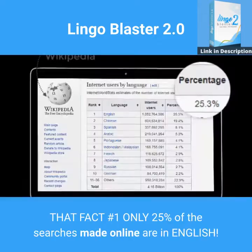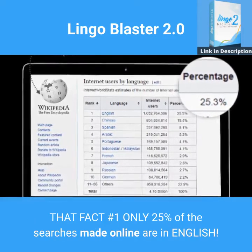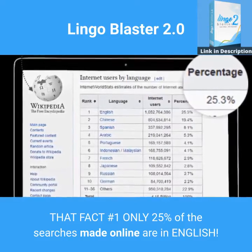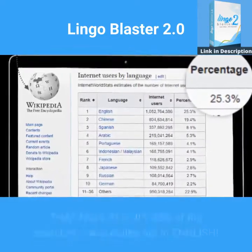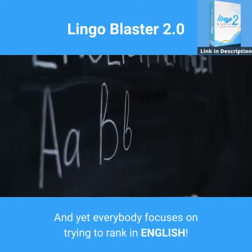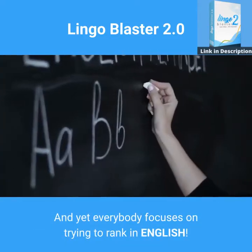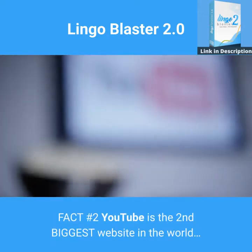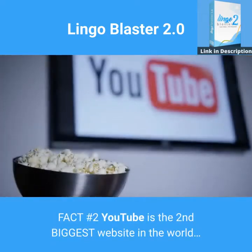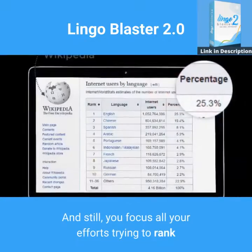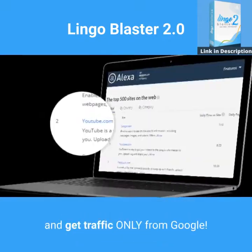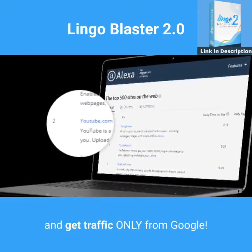Did you know that fact number one: only 25% of the searches made online are in English? And yet everybody focuses on trying to rank in English. Fact number two: YouTube is the second biggest website in the world, and still you focus all your efforts trying to rank and get traffic only from Google.